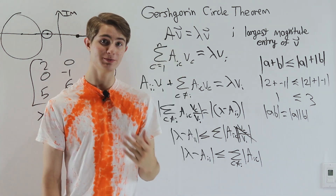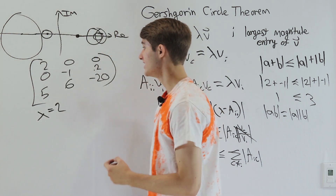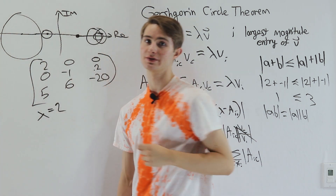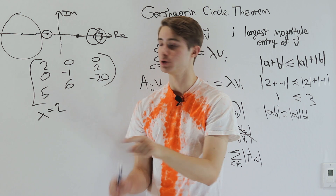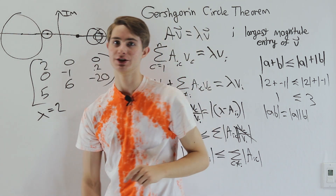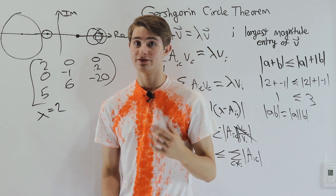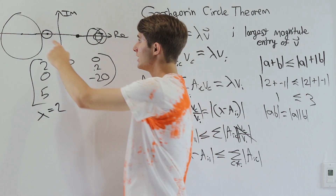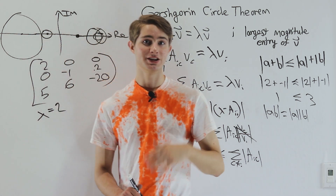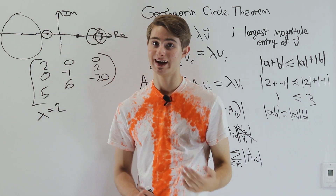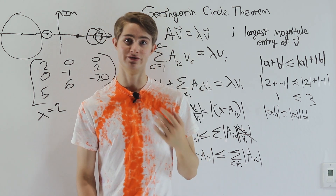Just by looking at Gershgorin disks — with centers equal to the diagonal entries of the matrix and radii equal to the sum of the non-diagonal entries in each row — we're able to get a lot of information about where the eigenvalues are located, which makes iterating to compute the exact values of those eigenvalues a lot more efficient.